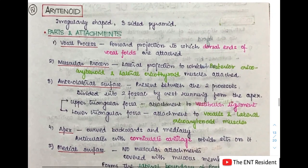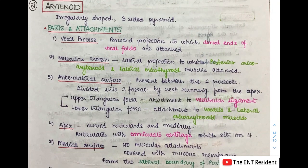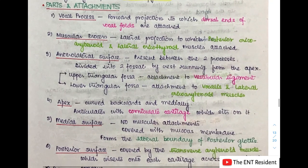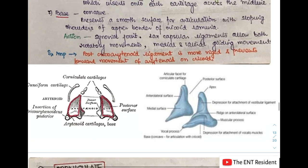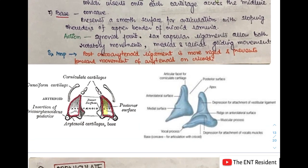Next are the paired cartilages, the first being the arytenoid cartilage. The arytenoids are very irregularly shaped, like a three-sided pyramid. The different parts are the vocal process, the muscular process, the anterolateral surface, the apex, the medial surface, the posterior surface, and the base. As shown in the picture, there is a posterior surface, a vocal process, a muscular process, an apex, and a base.